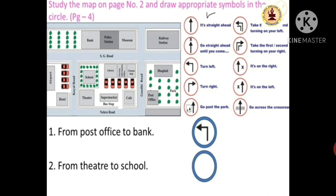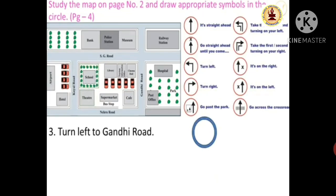Second number: from theatre to school. What is the theatre and what is the school? If you are there, you will turn right. Third one: turn left to Gandhi Road. Gandhi Road is a left turn.